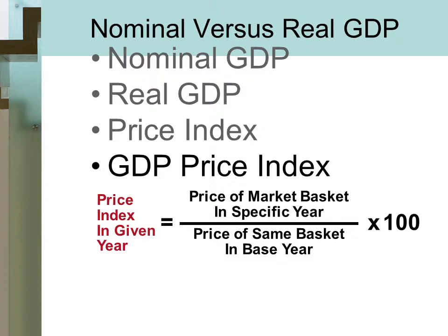We used all kinds of initials in the expenditures approach. We said GDP equals C plus I plus G plus X. We talked about the importance of measuring economic activity — first we measure it, then we compare it, and if possible we make policy changes. In this segment we'll define and talk about the difference between nominal GDP and real GDP.